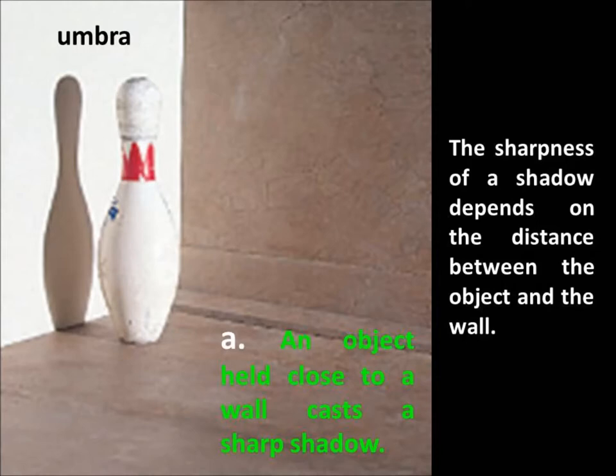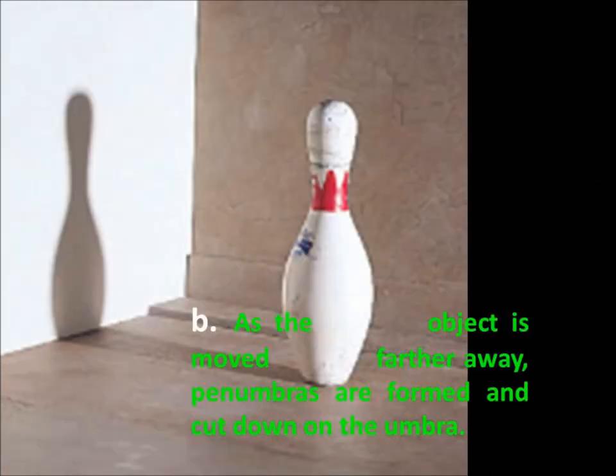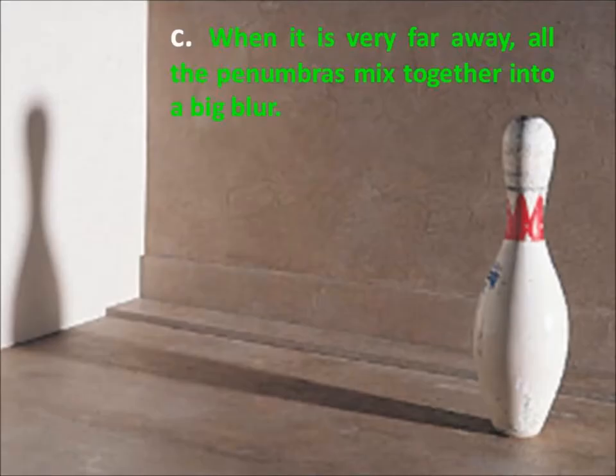Here's an example of fast light coming into a piece of glass, bending towards the normal and then upon leaving bending away from the normal. The sharpness of a shadow depends on the distance between the object and the wall. An object held close to a wall casts a sharp shadow, that sharp shadow is called an umbra. As the object is moved farther away, penumbras are formed and cut down on the umbra. The penumbra is kind of a twilight shadow around the original dark umbra. When it is very far away all the penumbra is mixed together into a big blur.